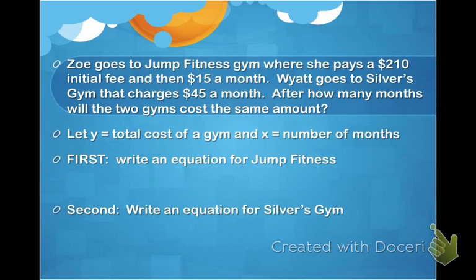The last question that I'm going to go over is where you are going to be comparing two things. And you've actually solved this kind of equation before. You didn't even know you were using systems to solve it. Zoe goes to Jump Fitness Gym, where she pays a $210 initial fee and then $15 a month. Wyatt goes to Silver's Gym, that charges $45 a month. After how many months will the two gyms cost the same amount?